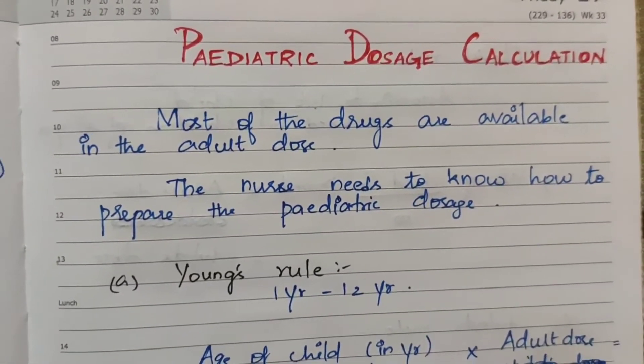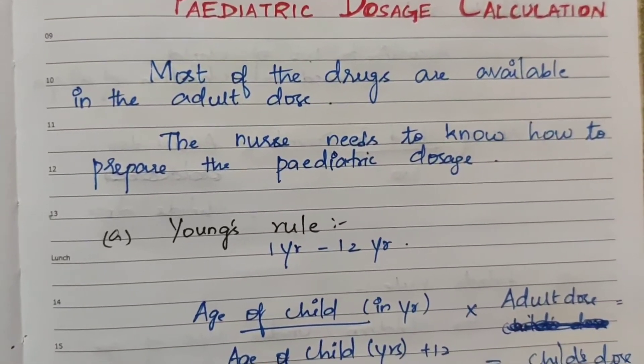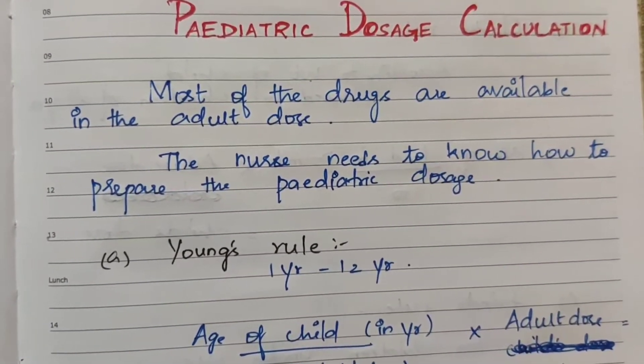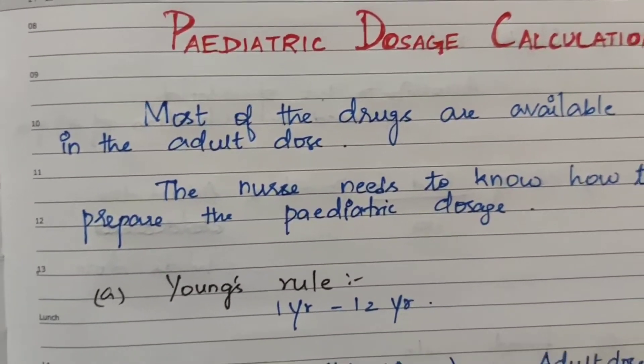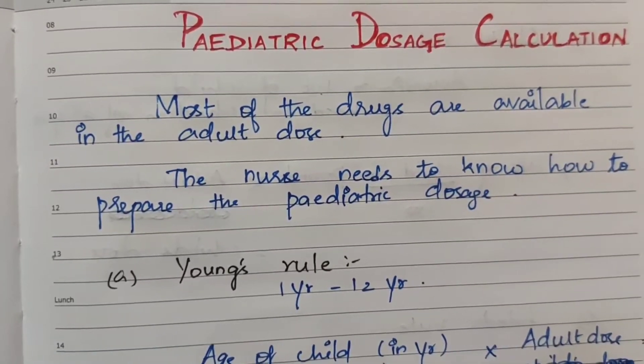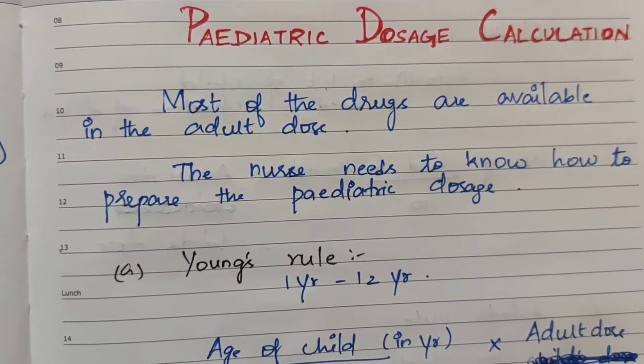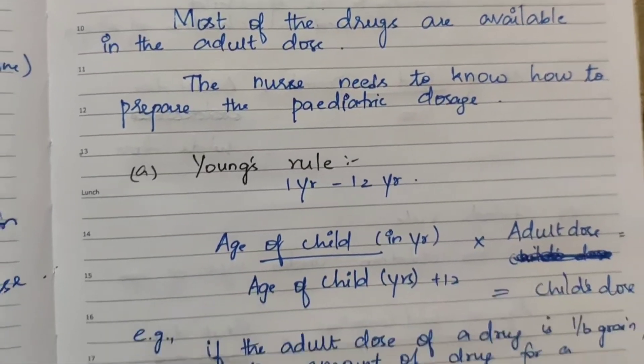Pediatric Dosage Calculation: Most of the drugs are available in adult doses. The nurse needs to know how to prepare the pediatric dosage. How do we convert? There are three formulas.